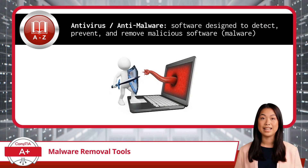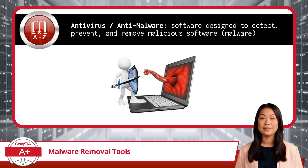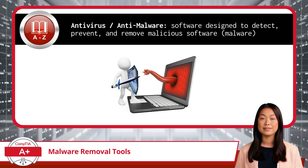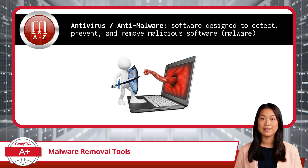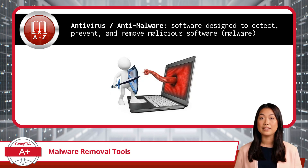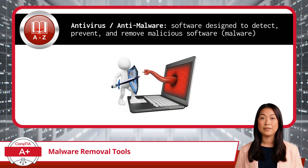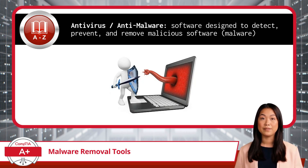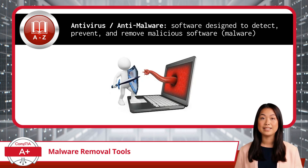In the vast realm of information technology, the security of your device stands as a paramount concern. Just as you wouldn't leave the door to your home unlocked, you shouldn't leave your devices unprotected. First up is antivirus software, which is often the first line of defense against malware. It works by scanning files for known viruses and blocking them before they cause harm. However, antivirus programs aren't foolproof — new or evolving malware strains can sometimes slip past them, which is why it's essential to keep the software updated and run regular scans.